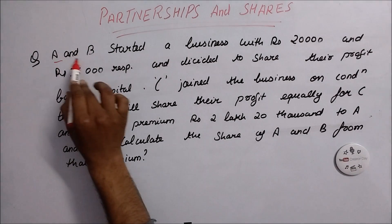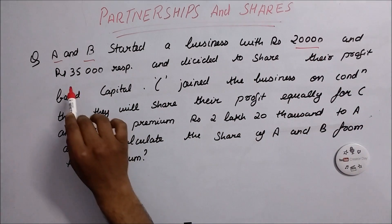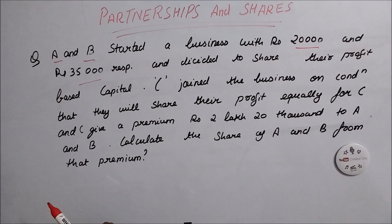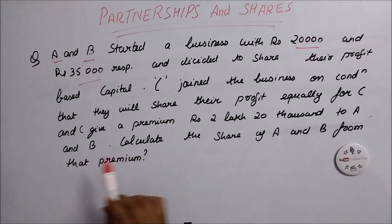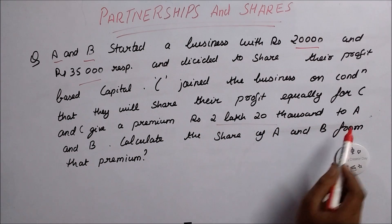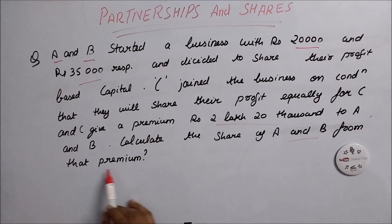Now here is the final question: A and B started a business with 20,000 and 35,000 rupees respectively and decided to share their profit based on capital. C joined the business on condition that they will share their profit equally, and C gave a premium of 20,000 to A and B. Calculate the share of A and B from that premium. Solve this by your own. I hope you enjoyed this video and thank you for watching us. Please subscribe.